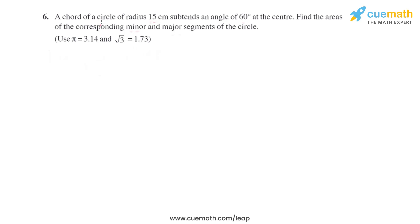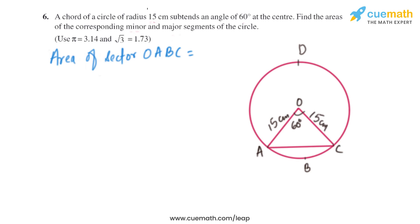Question 6 of this exercise says: the chord of a circle of radius 15 centimeters subtends an angle of 60 degrees at the center. Find the areas of the corresponding minor and major segments of the circle. So let's find the area of the minor segment ABCA.